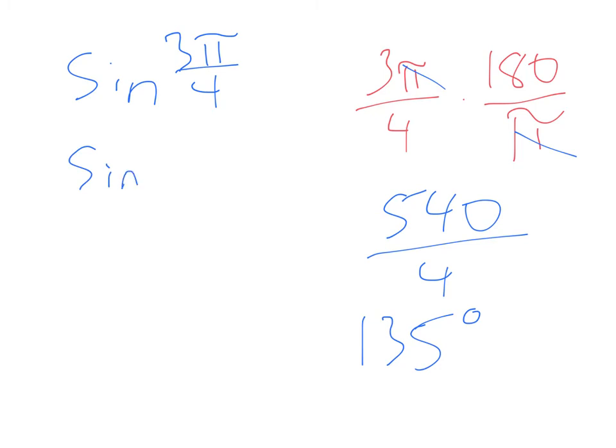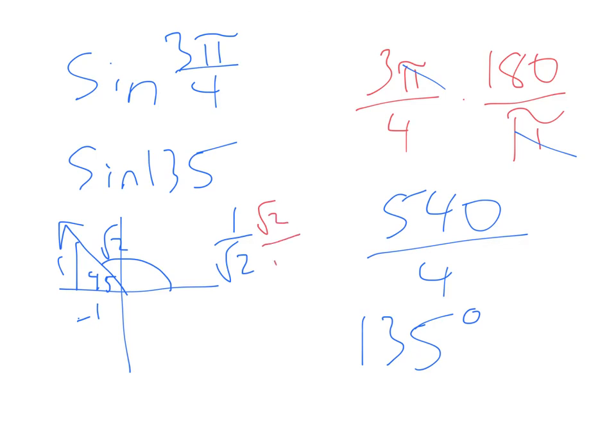So sine of 135. Let's draw it out. That's my 135. My reference angle is 45. So I have a 1, 1. But don't forget, that's a negative 1. Whoop! Because it's going to the left. And this is root 2. Sine is opposite over hypotenuse. So 1 over root 2. I've got to rationalize that. So I get root 2 over 2. And that would be my sine of 3 pi over 4. A little more work since we're converting to degrees and then doing the problem. There are other ways about it. This would tie into what we did before for degrees. So let's try one more of those.